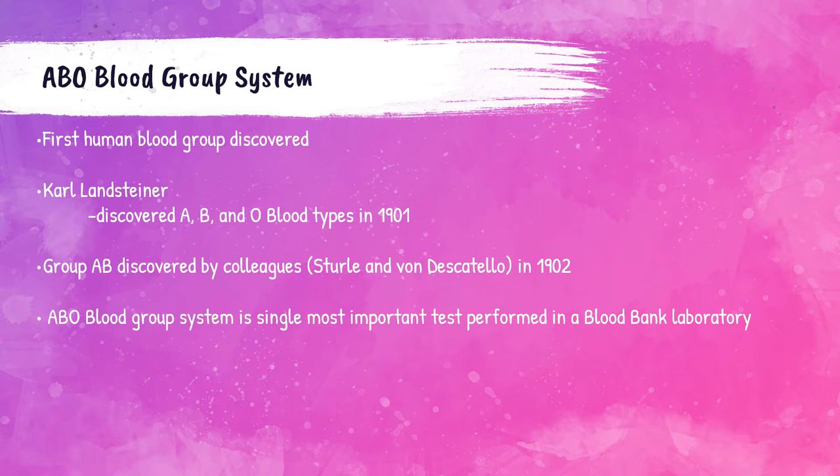With these experiments, he was able to discover the A, B, and O blood types. The AB blood type was discovered by a couple of Landsteiner's colleagues about a year later.